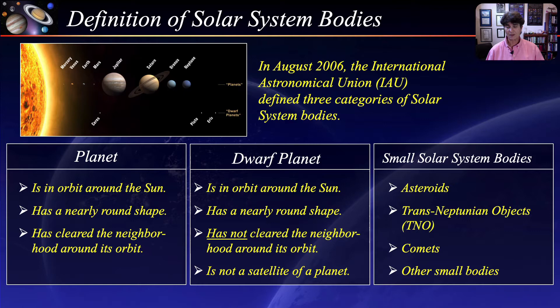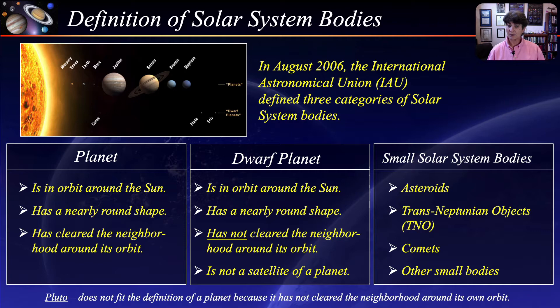According to these definitions, Pluto does not qualify as a planet because it has not cleared the neighborhood of its own orbit. Pluto is now classified as a dwarf planet and is recognized as the prototype of the new category of trans-Neptunian objects.